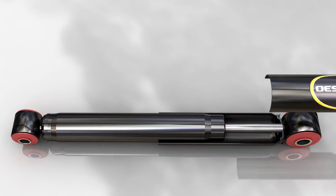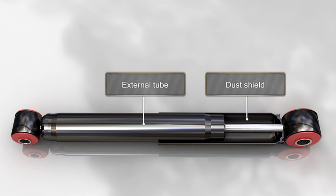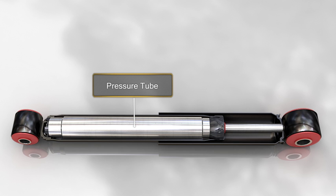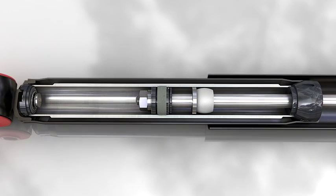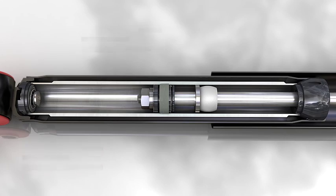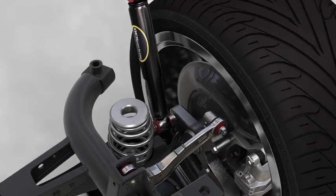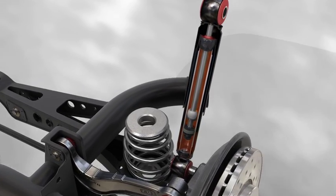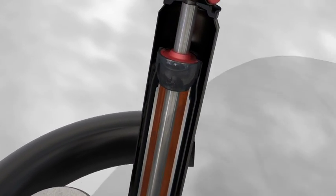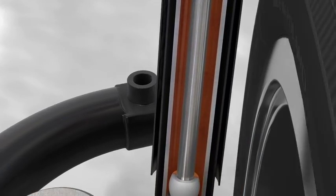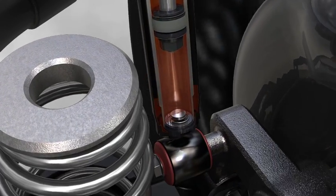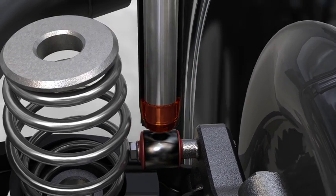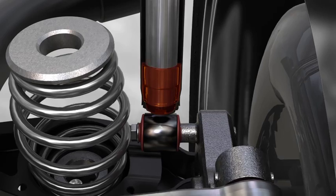Twin tube shock absorbers, as the name suggests, have a body made of two concentric tubes. These tubes consist of the pressure tube and the reserve tube. For the shock absorber to perform its function properly, the pressure tube must be full of oil at all times. Otherwise, the valves would be operating in air causing them to malfunction. The reserve tube will always be partially full of oil because its function is to ensure that the pressure tube fills with oil regardless of how compressed the shock absorber is.